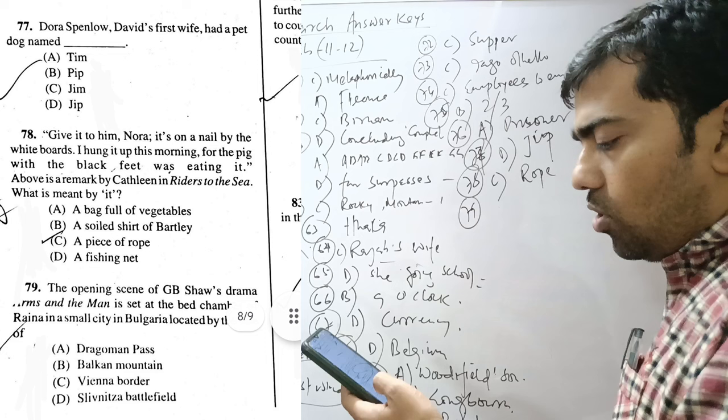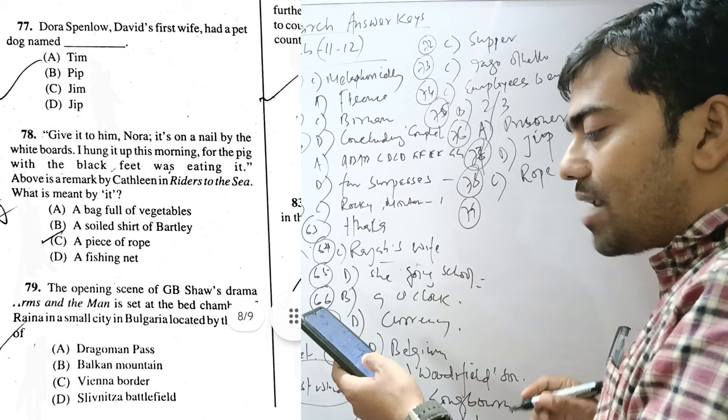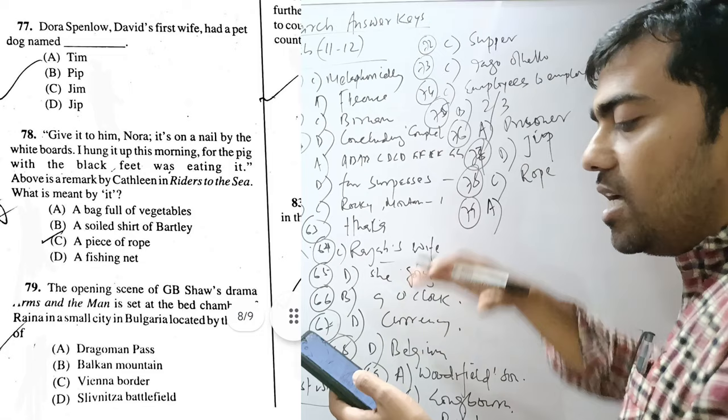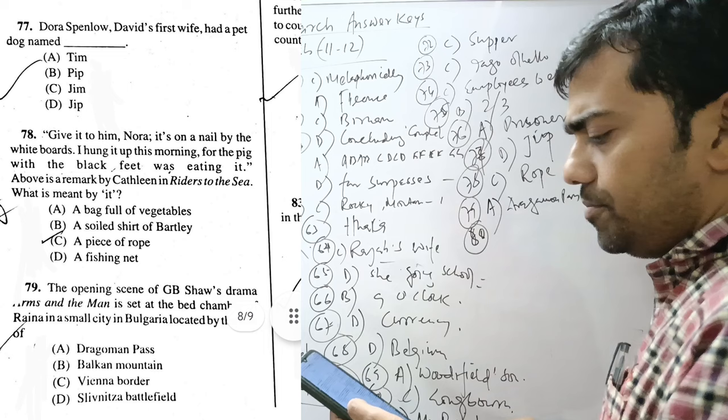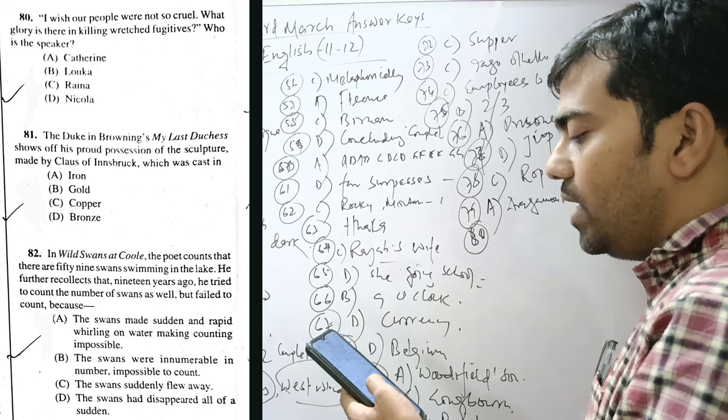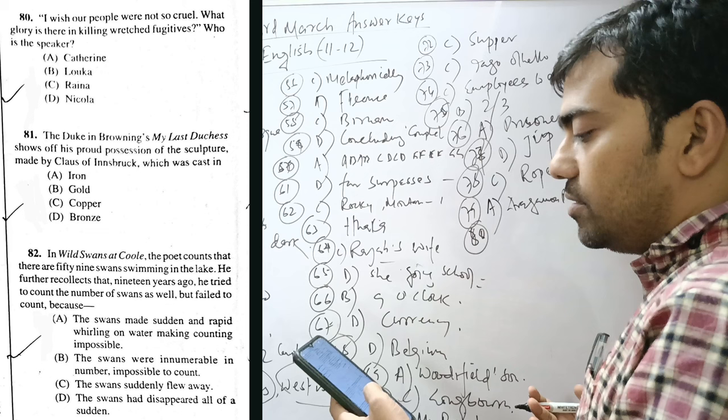Question 79. The opening scene of G.B. Shaw's drama Arms and the Man is set at the bedchamber of Raina in small city Bulgaria located by the side of Dragoman Pass. The Balkan mountain range and Dragoman Pass are there. But, amid the range, there is a pass named Dragoman Pass. Question 80. I wish our people were not so cruel. So, it is very simple. Raina out of its romantic illusions.